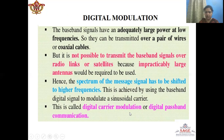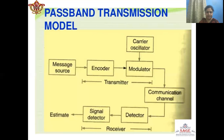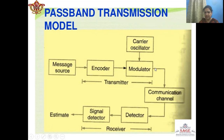This is called Digital Carrier Modulation or Digital Passband Communication. Here we can see a passband transmission model using a block diagram. We have a message source which transmits the message signal. Then we have an encoder which changes this analog message signal into bits, which is digital representation. Then we use the digital message for transmission with a modulator having a high-frequency carrier signal. This message signal is superimposed on the carrier signal and transmitted over the channel. At the receiver end, we have a detector which recovers the message signal from the modulated signal, and then a signal detector converts the digital message signal back into the analog message signal, which is then transmitted to the destination.